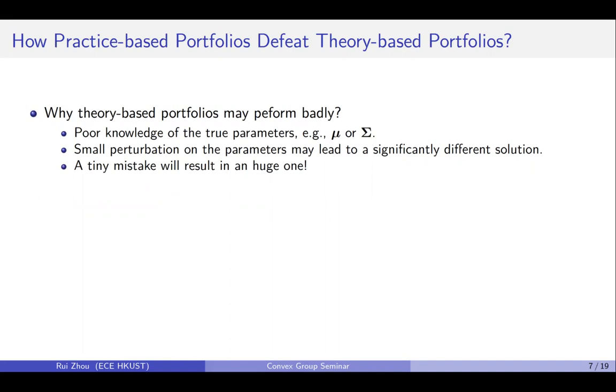About the bad performance of the theory-based portfolios, the reason is already known. Because we have very poor knowledge of the true parameters, like the mean and the covariance matrix, and a small perturbation on the parameters might lead to a significantly different solution. That's what people say a tiny mistake will result in a huge one.